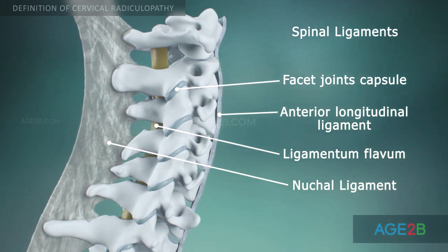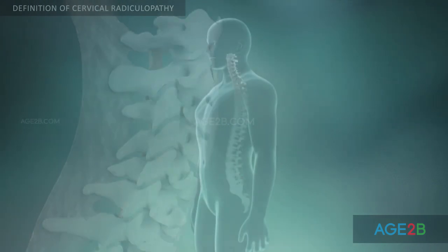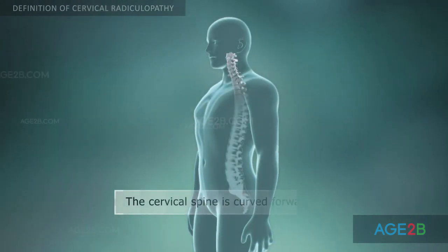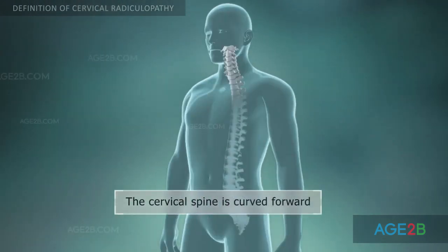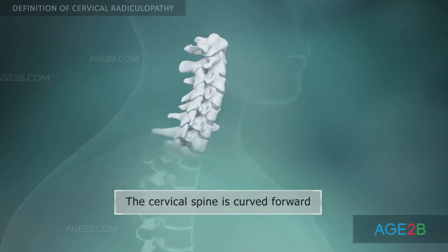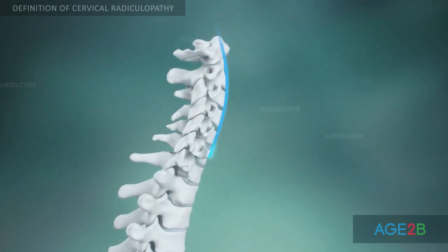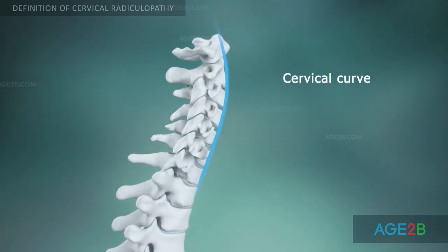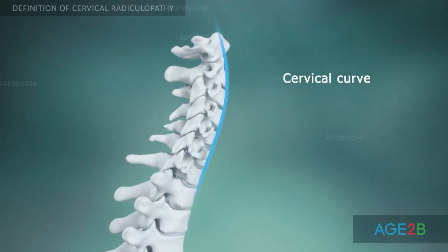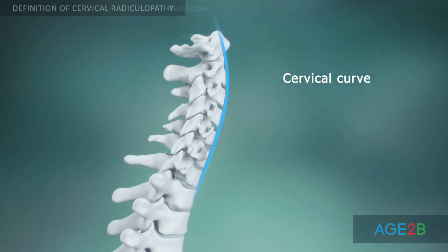The cervical region of the spine is curved forward. This curving helps to absorb pressure, vibrations, and shock that occur with movement.